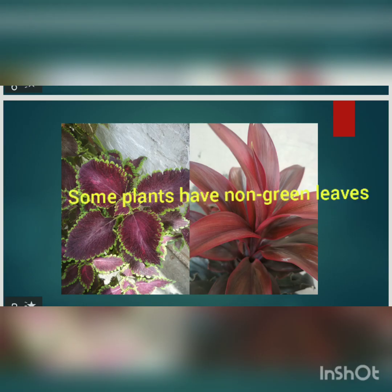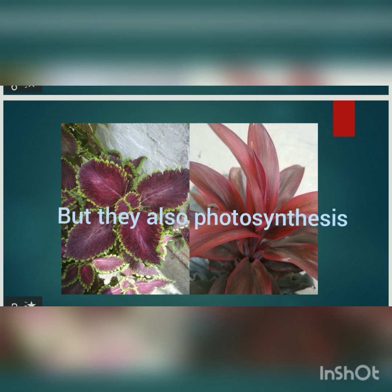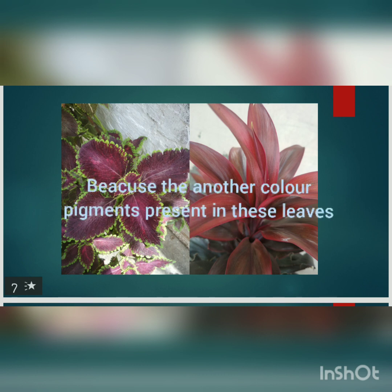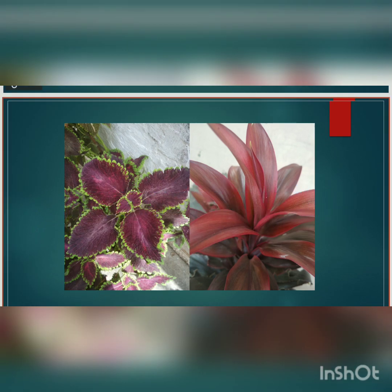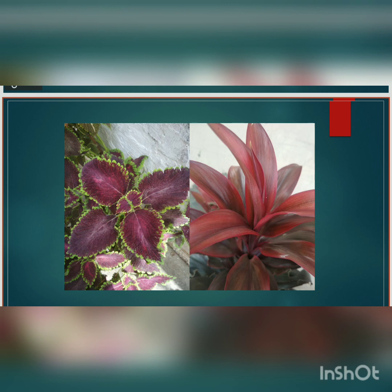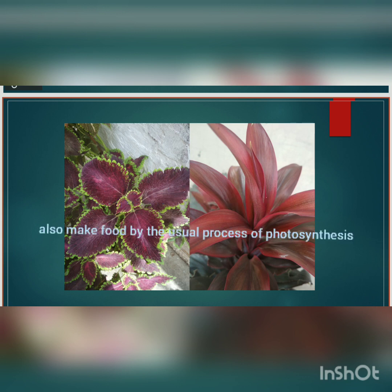Some plants have non-green leaves but they also carry out the process of photosynthesis, because these leaves contain other color pigments that mask the color of chlorophyll. So such leaves can still make food by the usual process of photosynthesis.